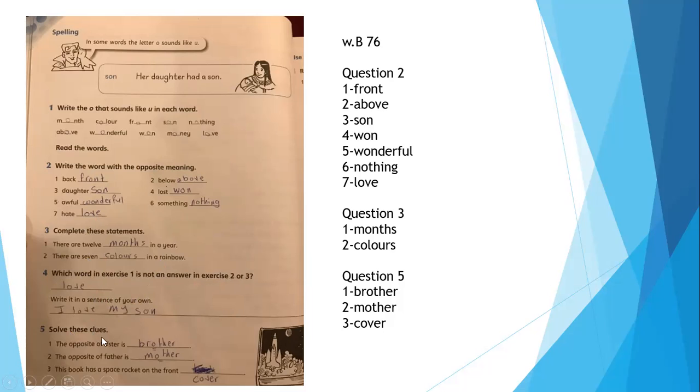Here, solve these clues. The opposite of sister is brother. The opposite of father is mother. And this book has a space rocket on the front cover.